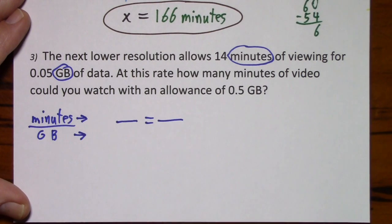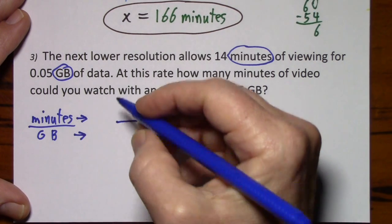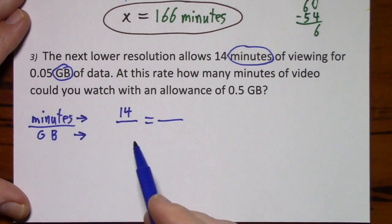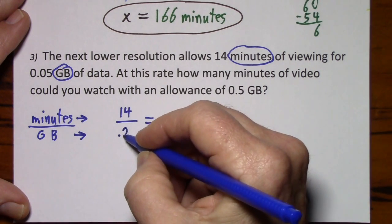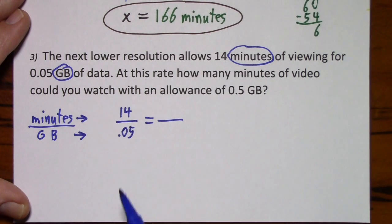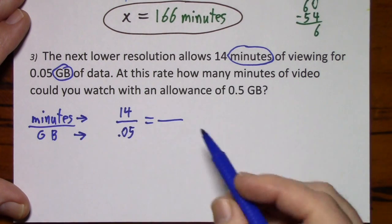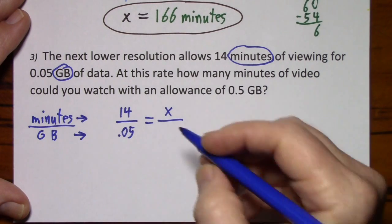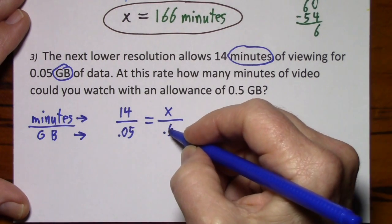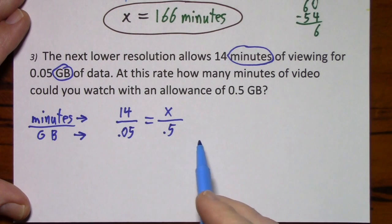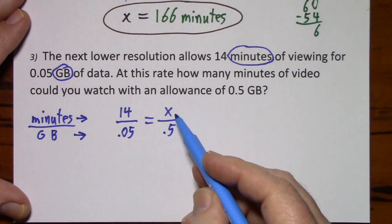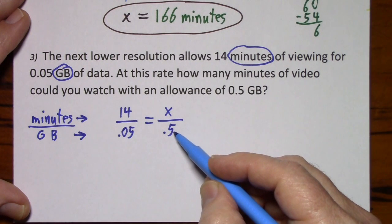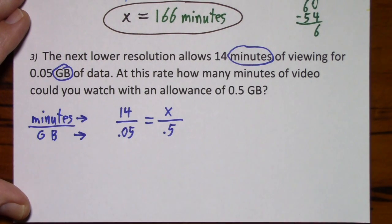I'll leave myself a little room and then just fill in the values. 14 minutes, 5 hundredths of a gig. How many minutes, 5 tenths of a gig.